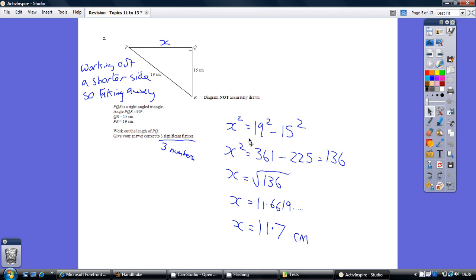So x squared is going to equal 19 squared, take away 15 squared. Note how we put the bigger number first, the biggest number first. So that's the key line, that top line. Then we just process that.